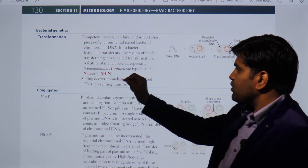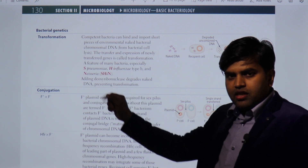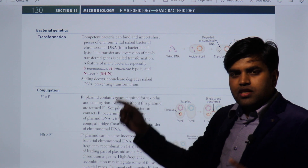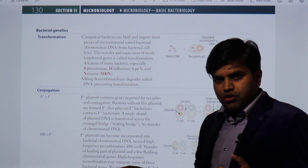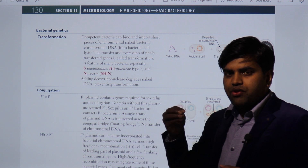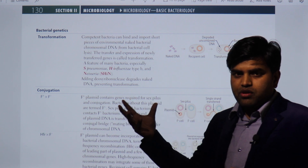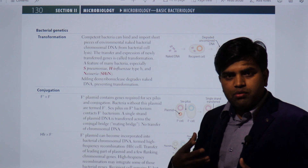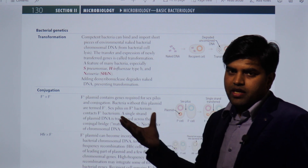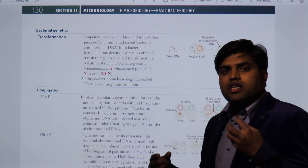For example, take Streptococcus pneumoniae or Haemophilus influenzae type B. These are normally unencapsulated organisms, but when they pick up genetic material from the environment and get transformed, they form a capsule and become pathogenic. This allows them to bypass our phagocytosis — that is transformation by picking up genetic material from the environment.